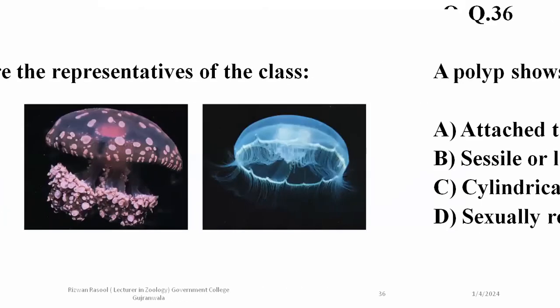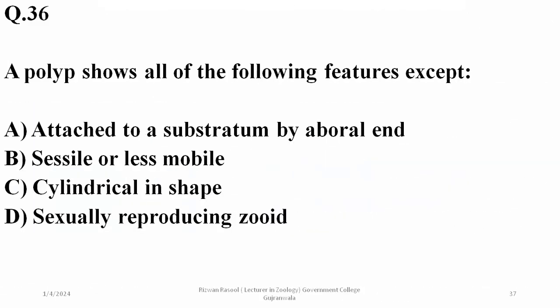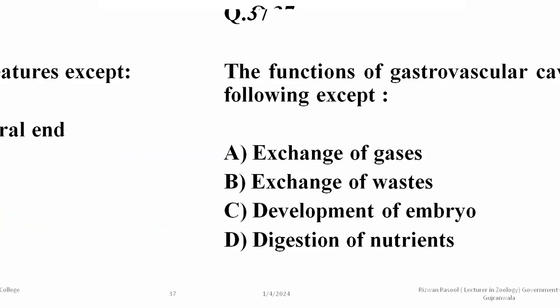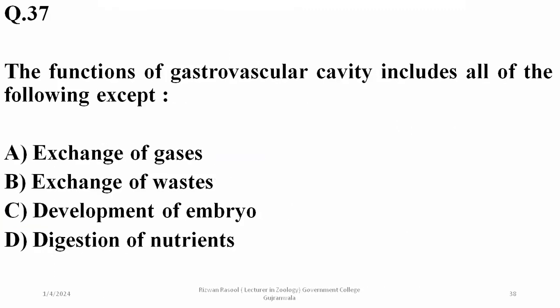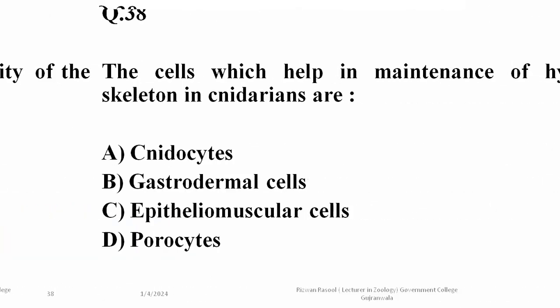Question on polyps: polyps usually do not reproduce through sexual reproduction except in Hydra, which has reproducing polyps that can also reproduce sexually. In the case of all other cnidarians, sexual reproduction has not usually been observed in the polyp state. The functions of the gastrovascular cavity include gas exchange, nutrient distribution, and waste removal, but it is not involved in embryo development — so C is excluded.